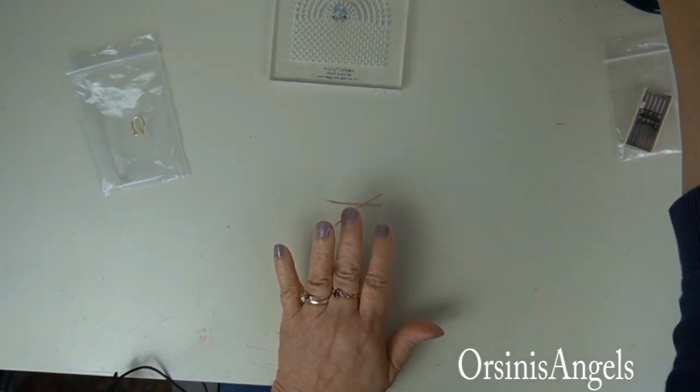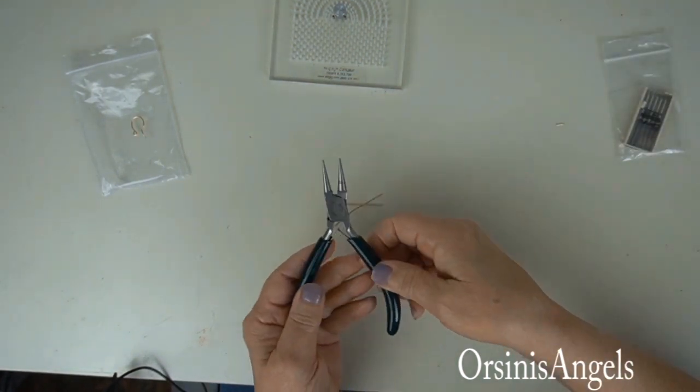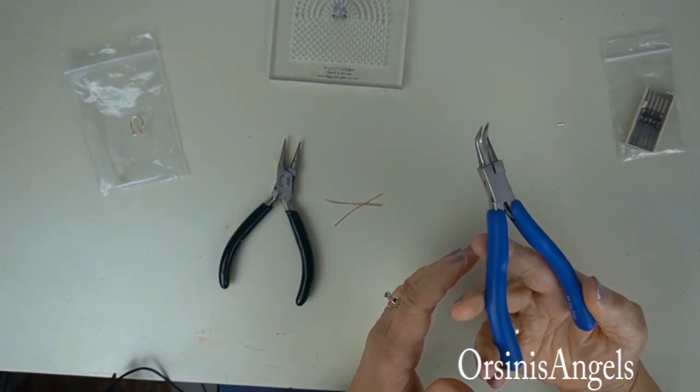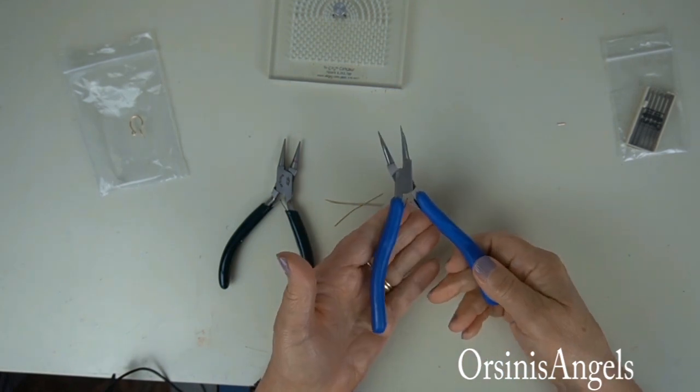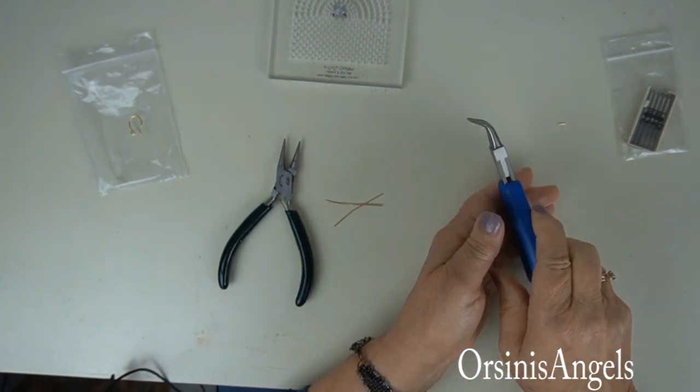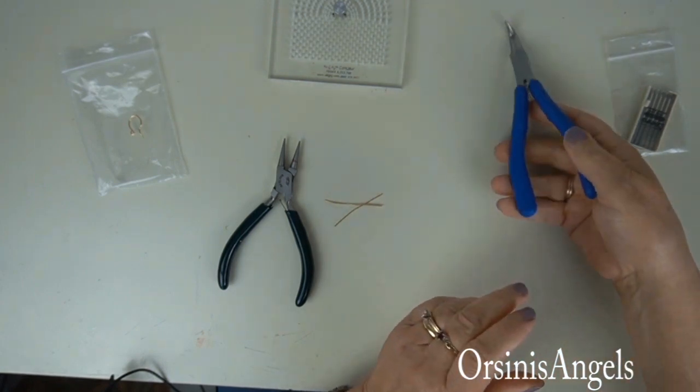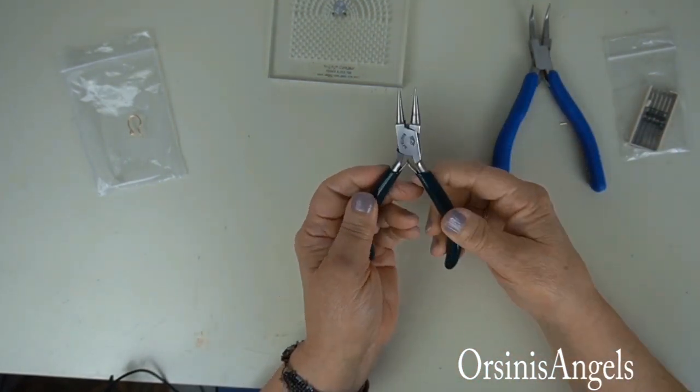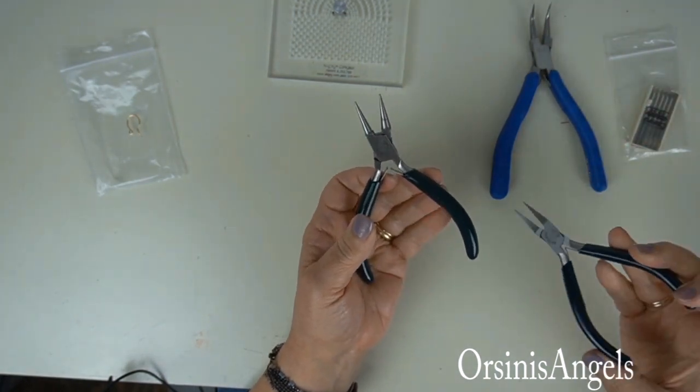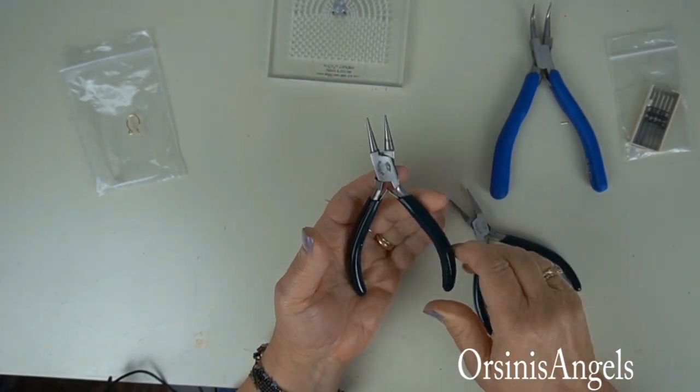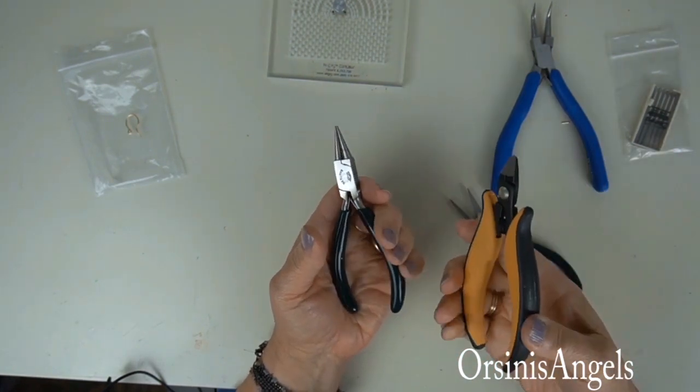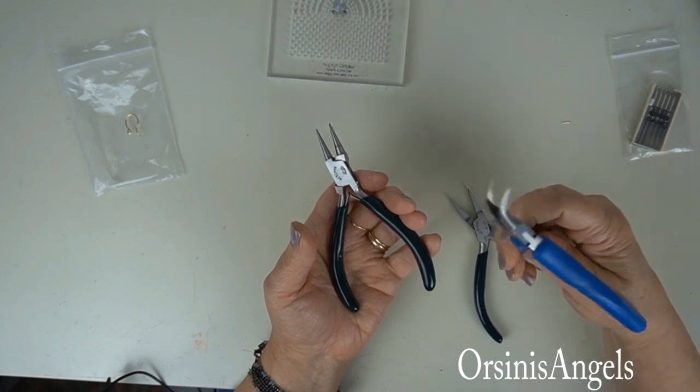I do use different jewelry pliers. This one is specifically from Wigjig and I do like this a lot because it gets into tight places. But basically, if you don't have a lot of supplies to make them, I definitely start out with a round nose and some sort of wire cutter.